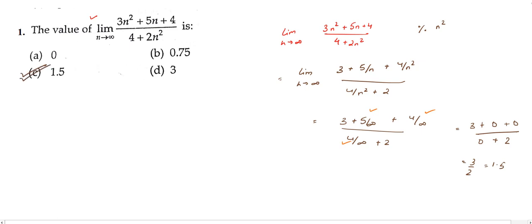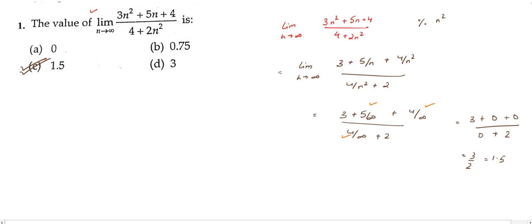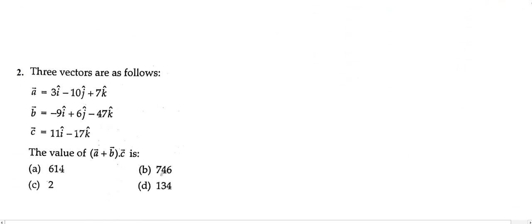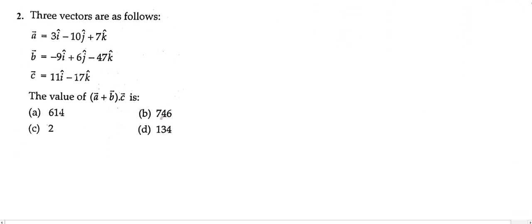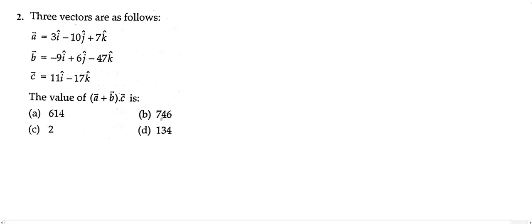So this gives us 3/2 which is 1.5. Our answer is 1.5, which is option C. Now let us move on to our second question, which is based on vectors. We have vectors a, b, and c, and we need to find the value of (a + b) dot product c.